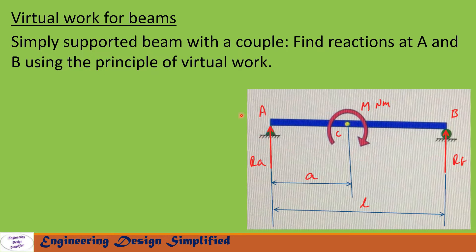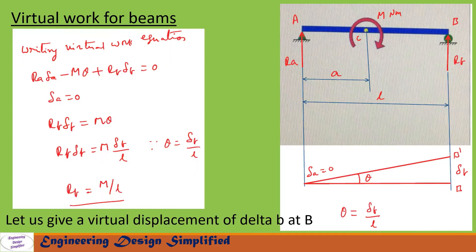To find reaction at B (Rb), let us give a virtual displacement of δb at B. The beam will assume position AB'. We have a triangle A-B-B'. At A, δa equals zero, and at B the displacement is δb. Since this angle is very small, we can write the angle θ equal to δb divided by L.